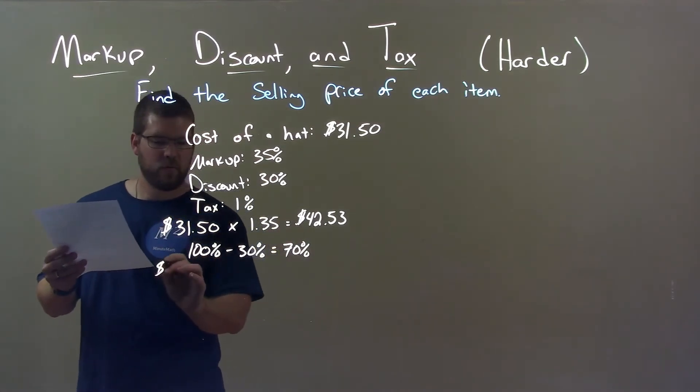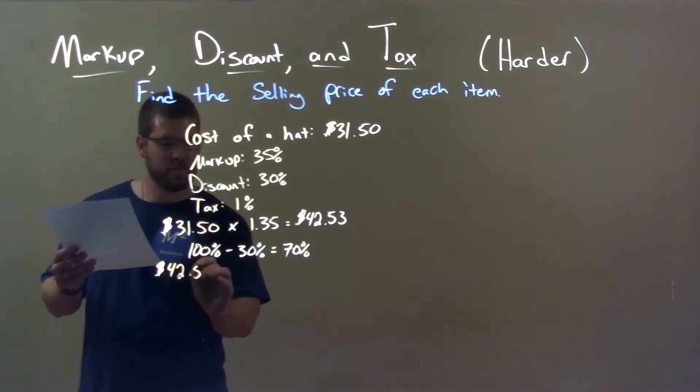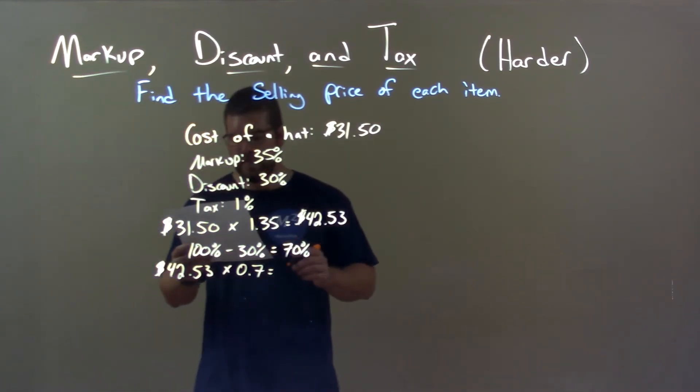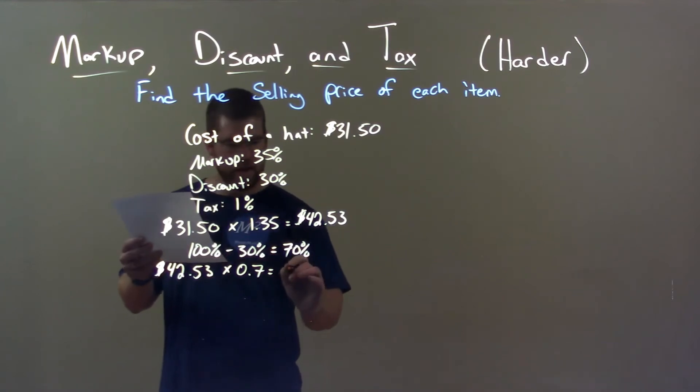Multiply that out. We have $42.53 and multiply that by 0.7, 70% as a decimal. That gives us a cost or price of $29.77.